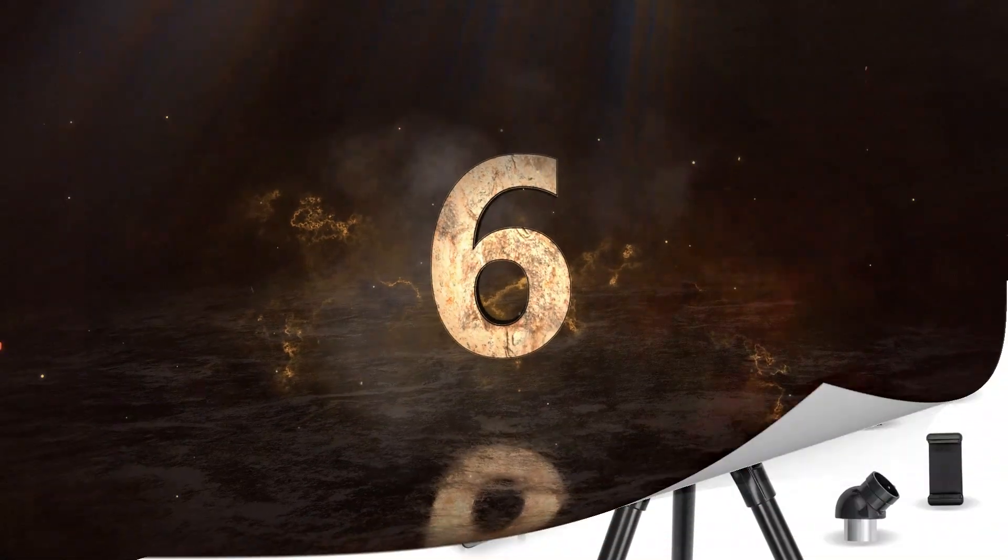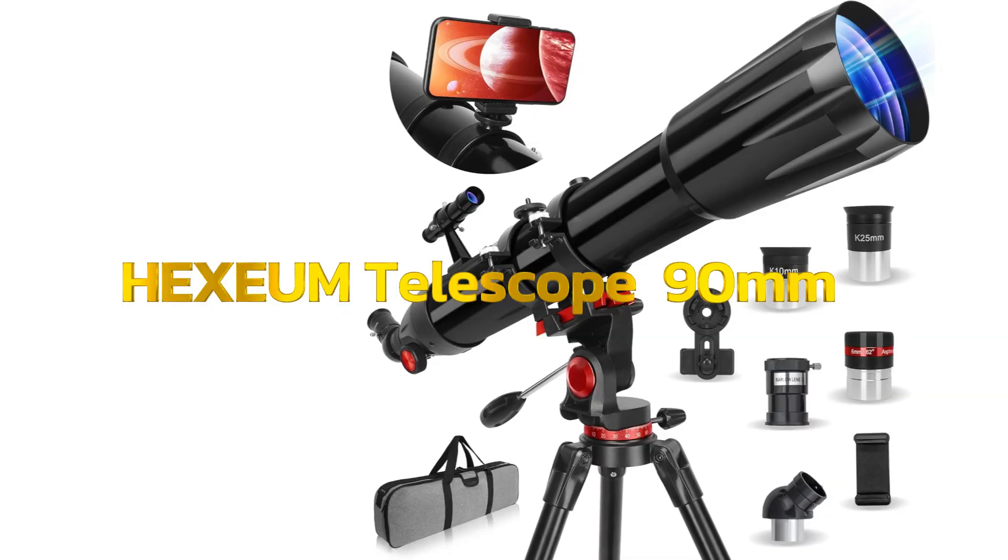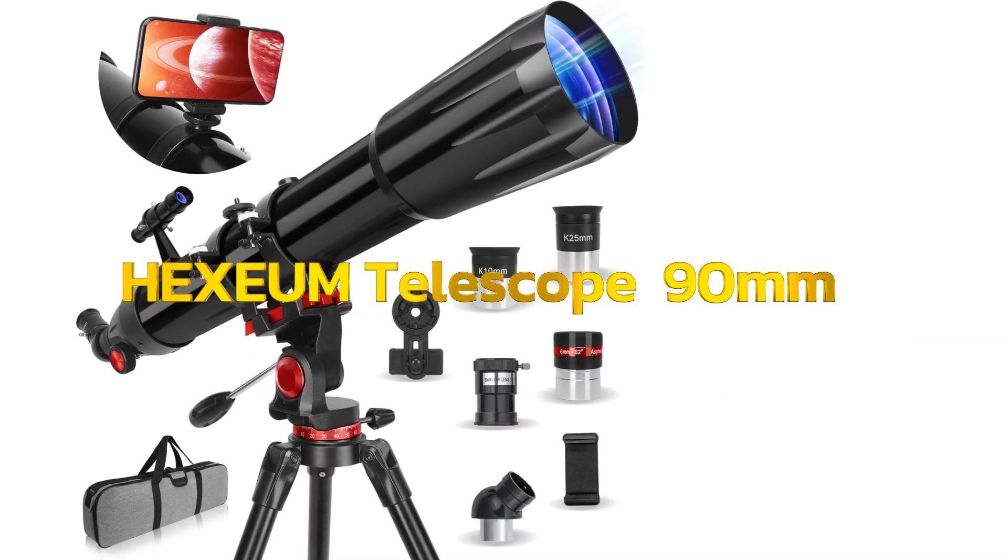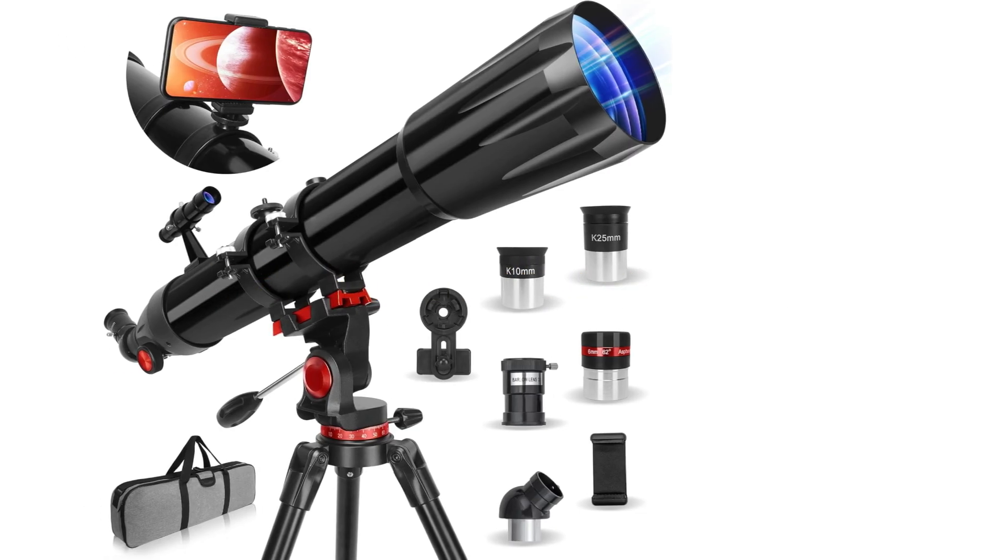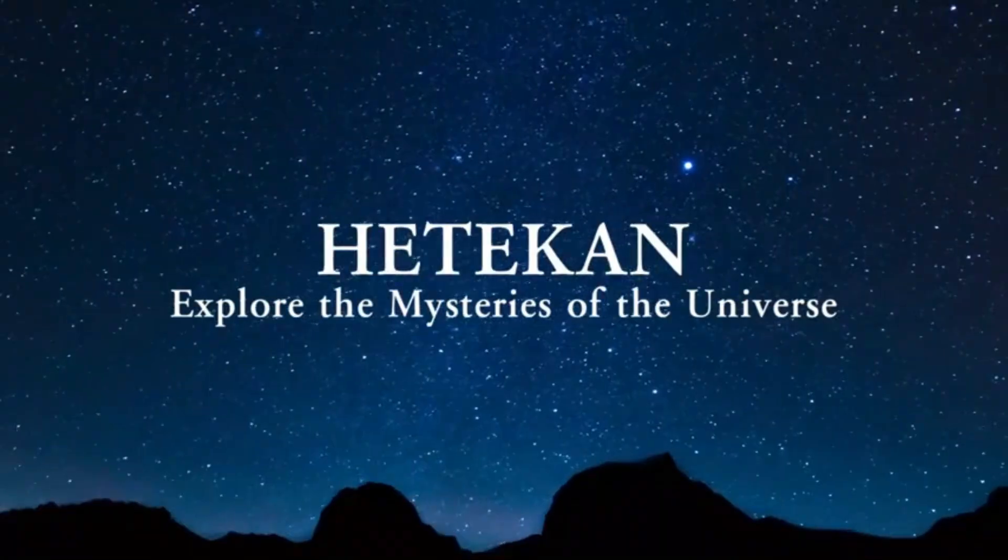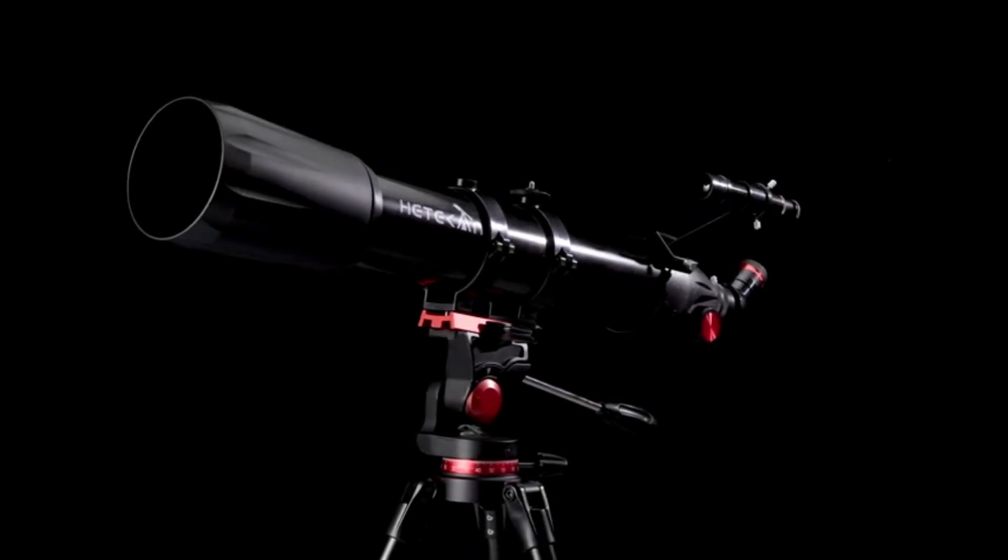Number 6. Hedekin Telescope, Telescope for Adults High Powered. 90mm Aperture 900mm Professional Refractor Telescopes for Kids and Beginners, Magnification 450x, for Planet Observation with Stainless Tripod and Phone Adapter.